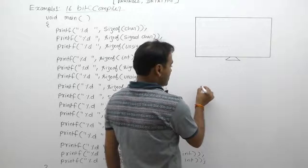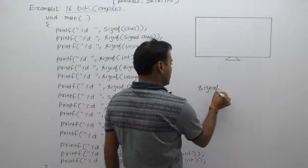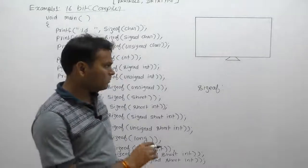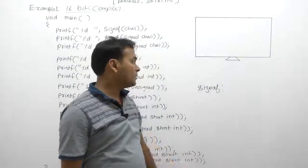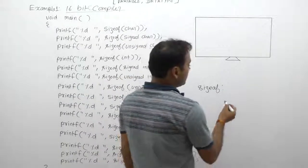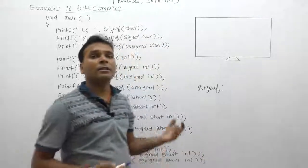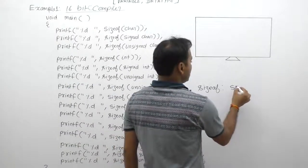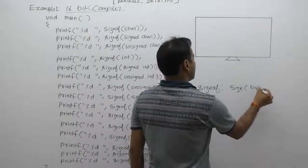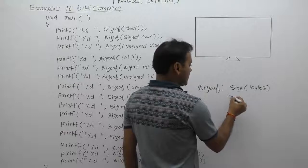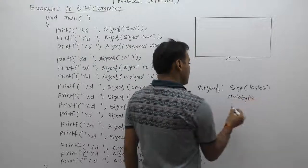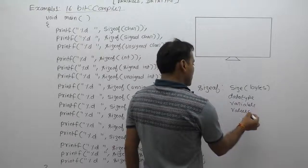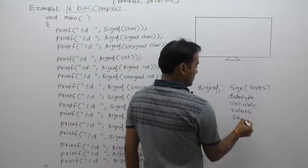In C language, the sizeof keyword is a separately available operator. We are discussing details about the sizeof operator during the operator sessions; here we want to provide only a basic idea of the sizeof operator. It returns the size of a required expression, required data type, required value, or required variable in the form of bytes. The sizeof operator can be applied for different cases like directly to data types, variables, values, or expressions.